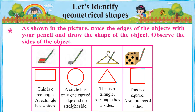Yahan par ek baat par hum ghaur karenge: rectangle ke bhi 4 sides hain aur square ke bhi four sides hain — phir hum kaise pehchanenge ke yeh rectangle hai aur yeh square hai? To yaad rakhiye: rectangle ke opposite sides yaani aamne saamne ke sides ek jaise hote hain — do sides ek size ke hote hain aur unke opposite sides bhi ek size ke hote hain, ise rectangle kehte hain. Lekin square mein, square ke chaaron sides ek hi size ke hote hain — jis shape ke chaaroñ sides bilkul ek jitne hon woh square hai, aur jiske sirf opposite sides ek jaise hon woh rectangle hai.